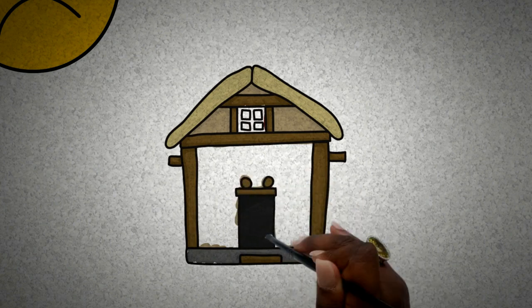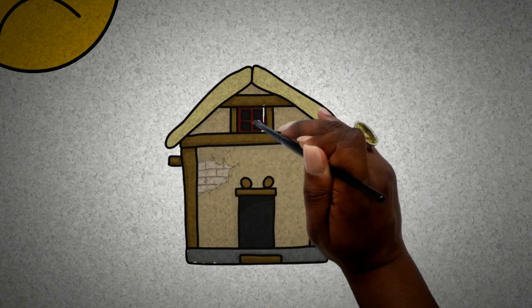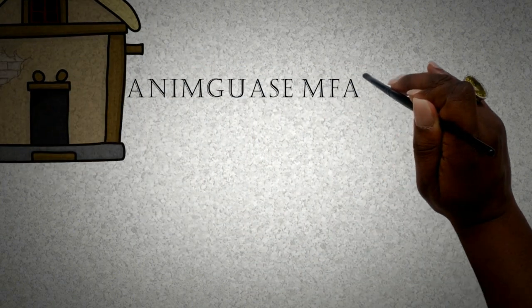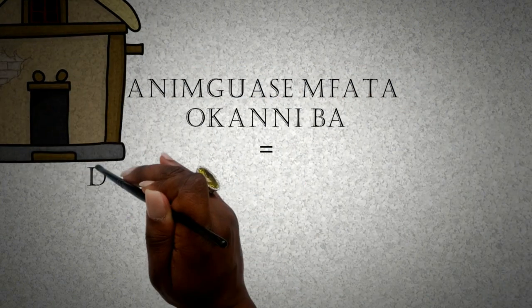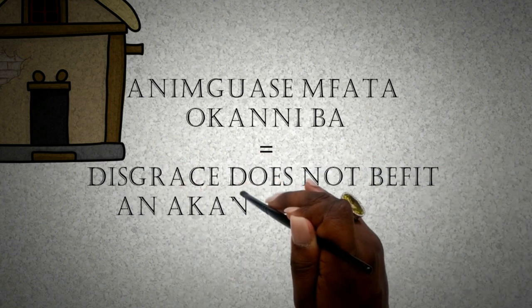Moral of the story: Do good, don't be greedy, because 'In iguasiye empata okaniba,' which means disgrace does not befit an Akan, or you could also interpret it as disgrace does not befit anybody.